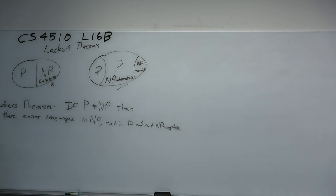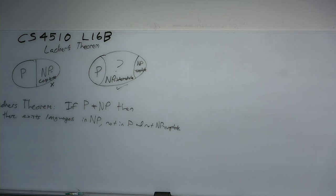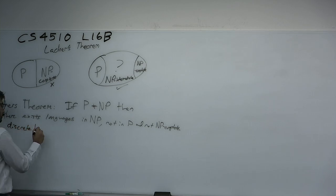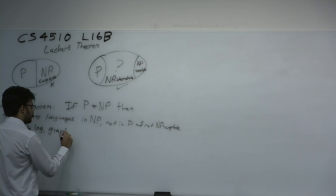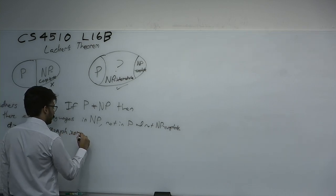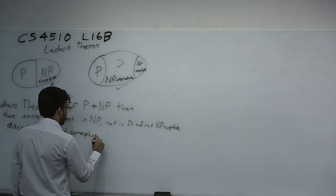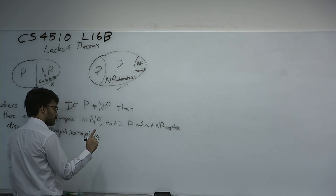There's a simpler argument we're going to make today. By diagonalization, it's kind of a useless language we're going to prove is in there. We have some ideas of useful languages we think are in NP-intermediate, conditionally on the fact that we think P does not equal NP. These include discrete log, graph isomorphism, and factoring.